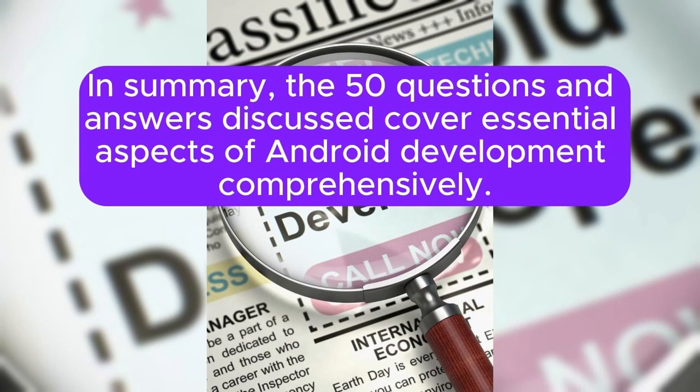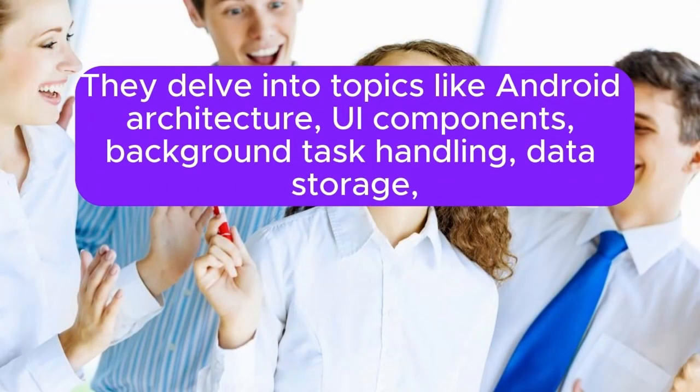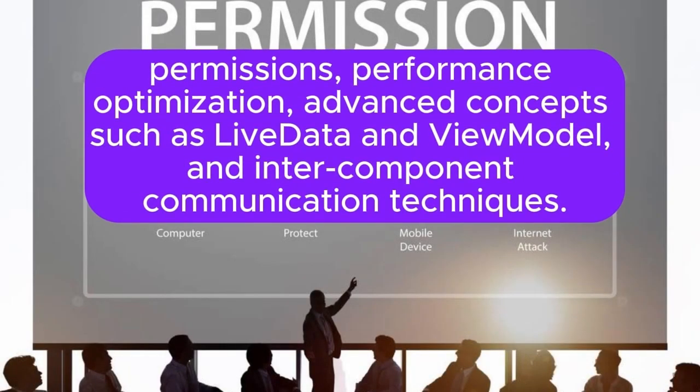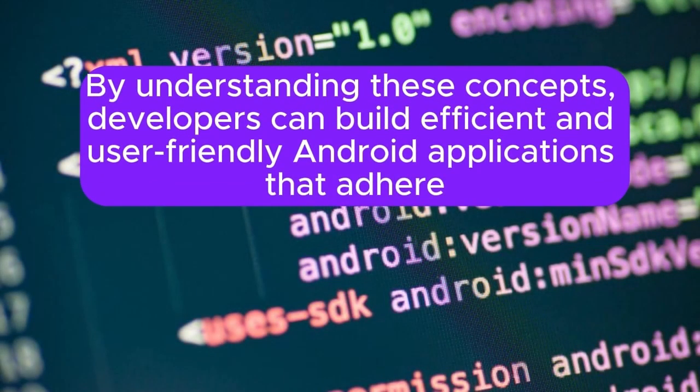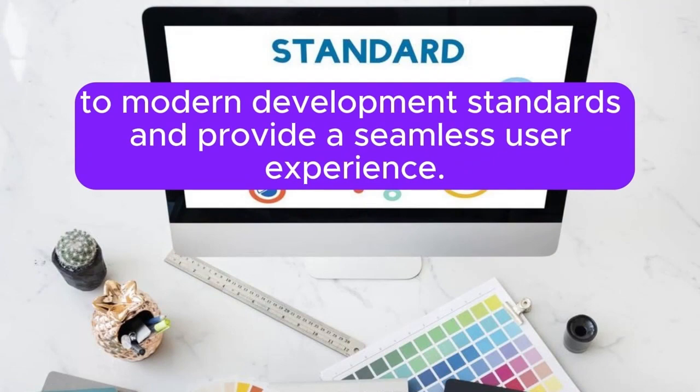In summary, these 50 questions and answers cover essential aspects of Android development comprehensively — topics like Android architecture, UI components, background task handling, data storage, permissions, and performance optimization, as well as advanced concepts such as LiveData, ViewModel, and inter-component communication techniques. By understanding these concepts, developers can build efficient and user-friendly Android applications that adhere to modern development standards and provide a seamless user experience.